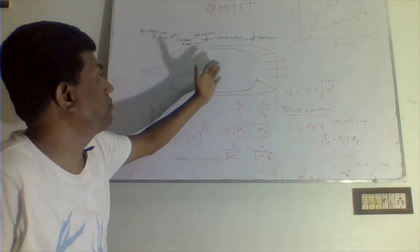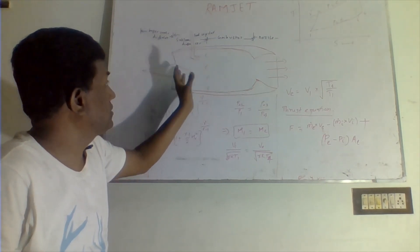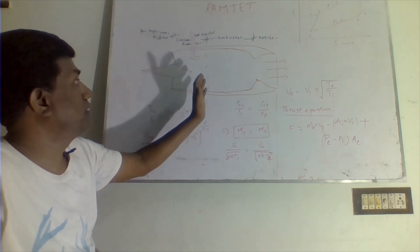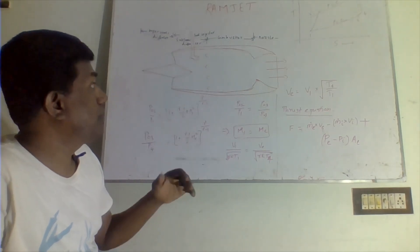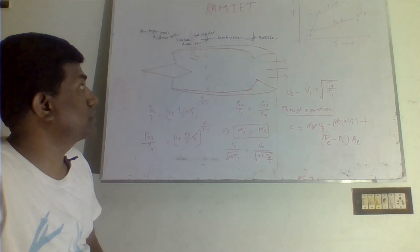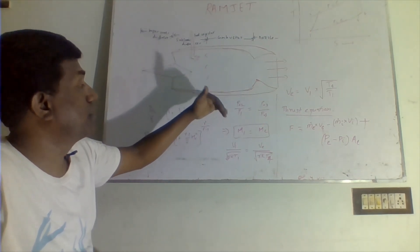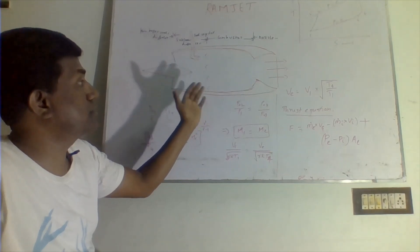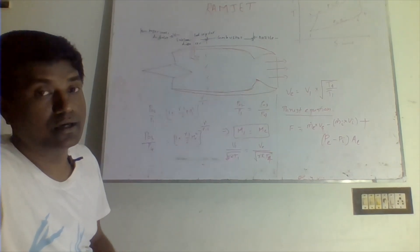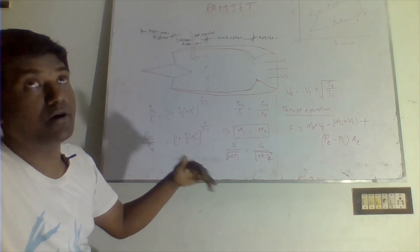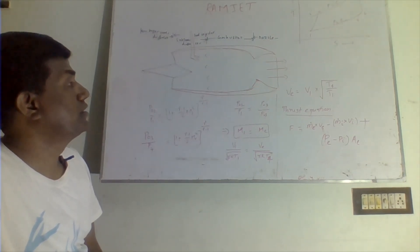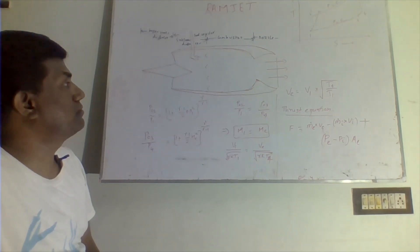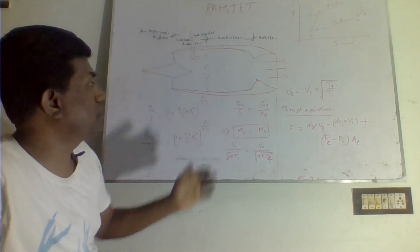Another advantage is that since there are no moving parts, the ramjet engine can reach temperatures up to 2000°C, whereas a turbojet engine can only go up to about 900°C. This means there is no limit on exit conditions, and the engine can fly at very high Mach numbers with very high exit velocities.